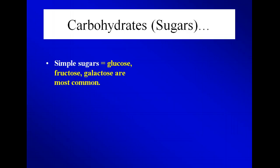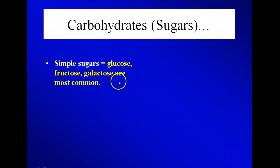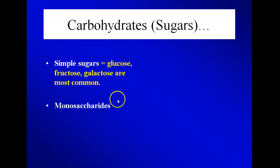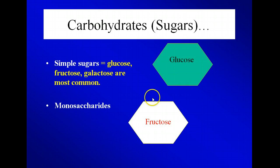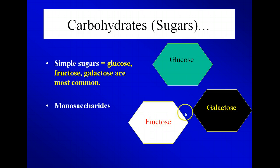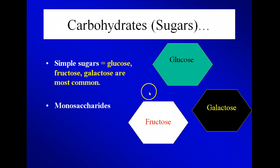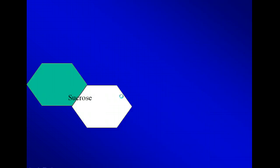First, we have carbohydrates or sugars. Anytime you hear the term carbohydrate, we're talking about a sugar. All sugars end in '-ose,' so whenever you see a word that ends in '-ose,' you know you're talking about a sugar. A simple sugar is just one molecule — it's called a monosaccharide. Examples include glucose, fructose, which is commonly found in fruit, and galactose. These are the ones you really want to stay away from in your diet because they tend to cause your insulin to spike and can lead to type 2 diabetes.